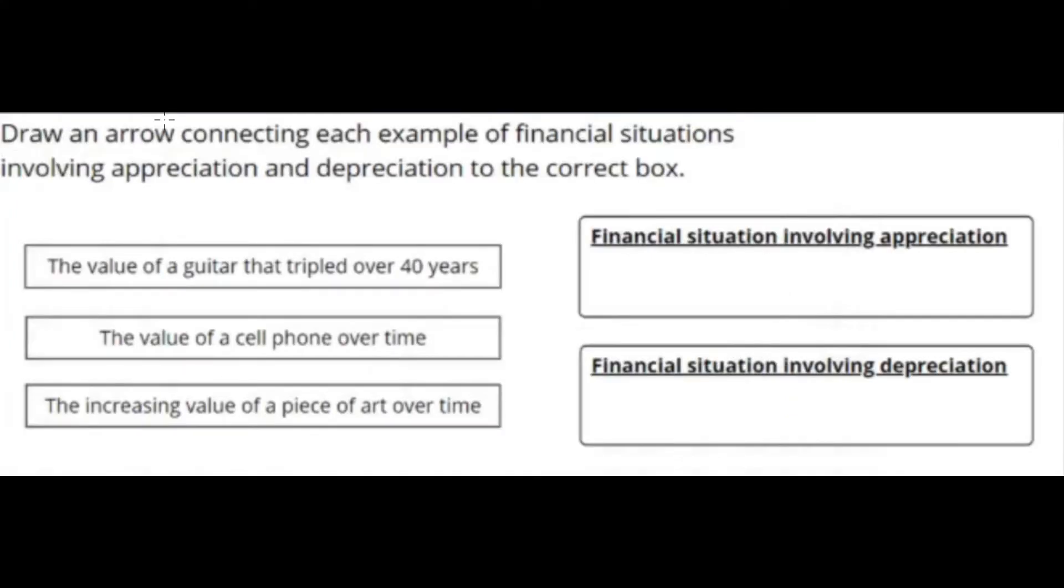This question asks us to draw an arrow connecting to each example of financial situations involving either appreciation or depreciation. So let's look at our three statements here. The value of a guitar that tripled over 40 years. So the value went up. The value of the guitar went up. So therefore, the financial situation is involving appreciation. So we can just put an arrow to words like that. The value of a cell phone over time. Usually, the cell phone degrades and it loses value over time. So it would be depreciation. The increasing value of a piece of art over time. It clearly states increasing value. So therefore, this would be a financial situation involving appreciation.